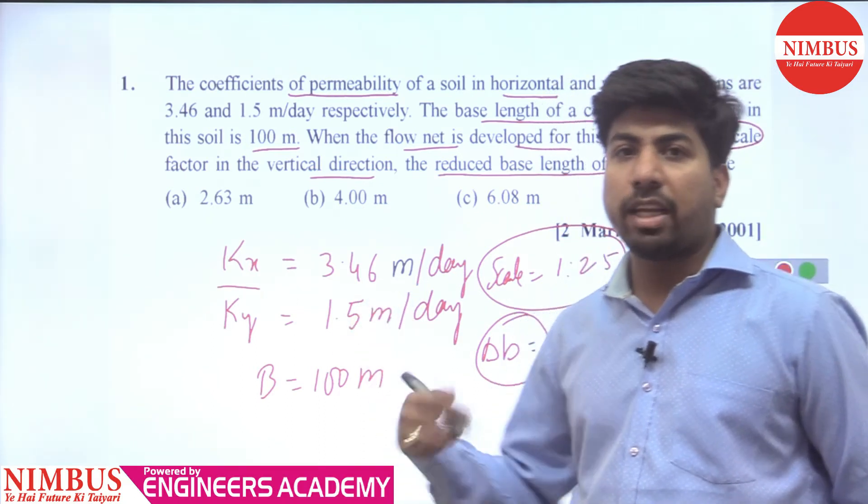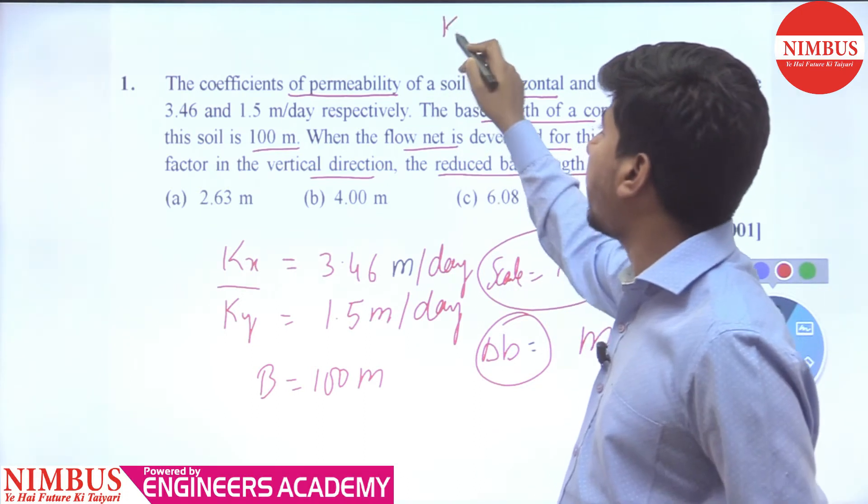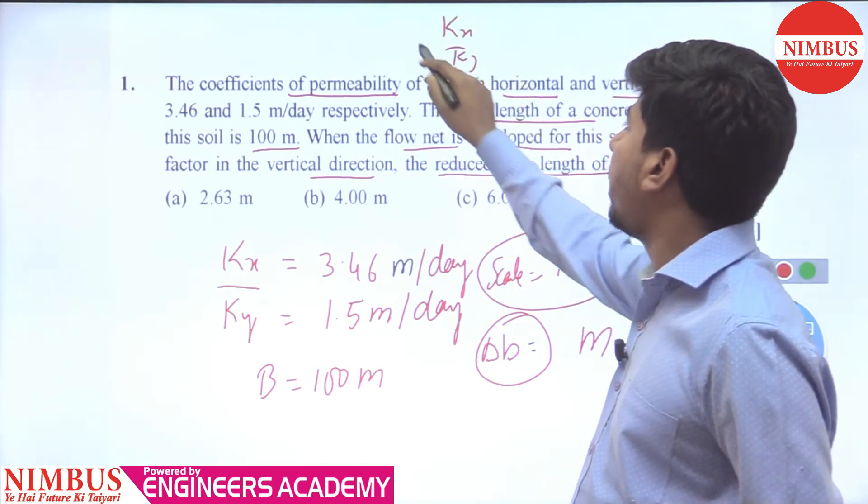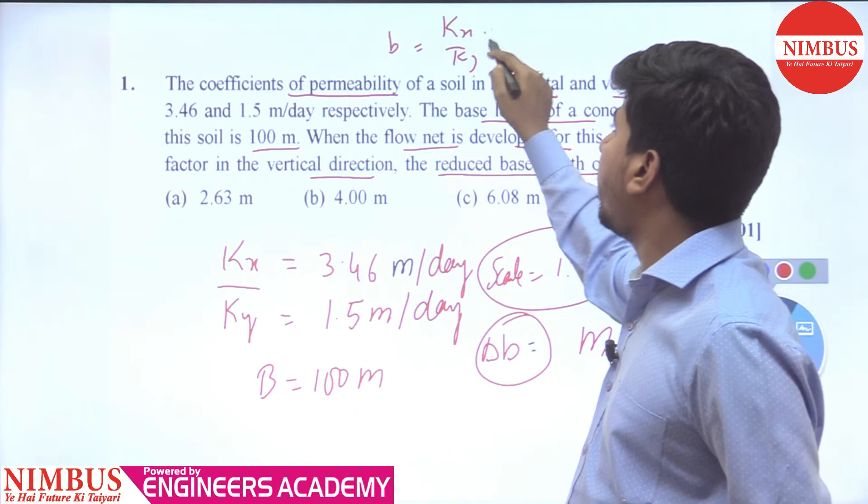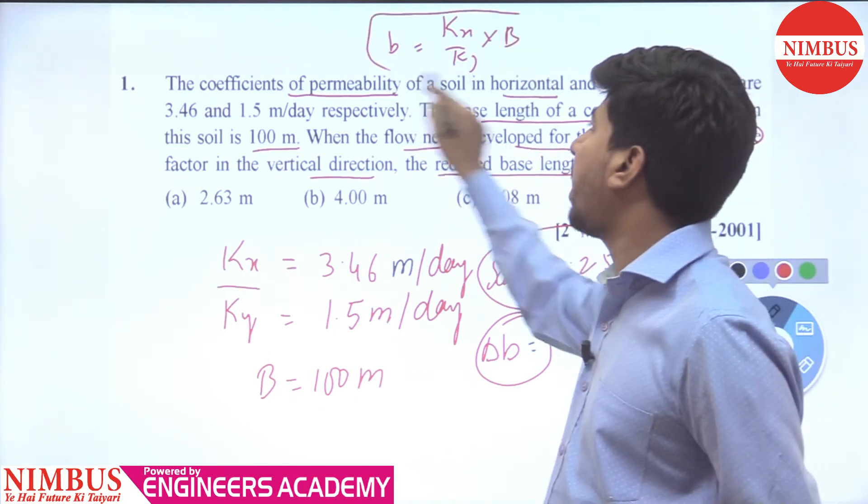First of all, we have to talk about the relationship between x and y. If we talk about kx by ky is equal to small b into capital B. Here you have to talk about b.